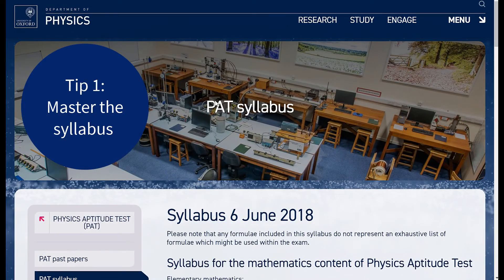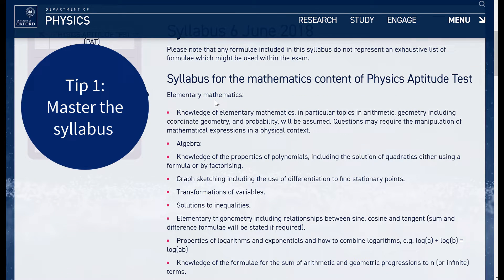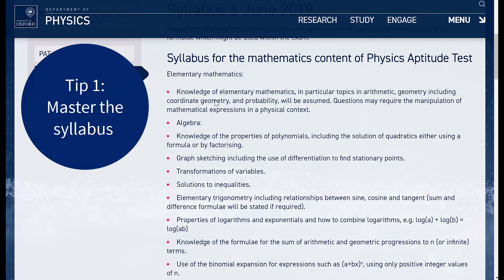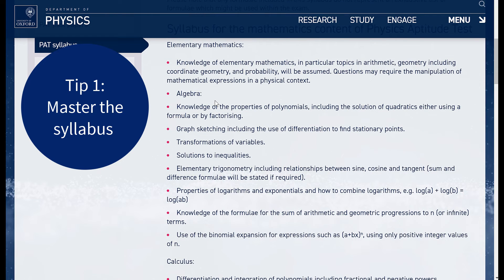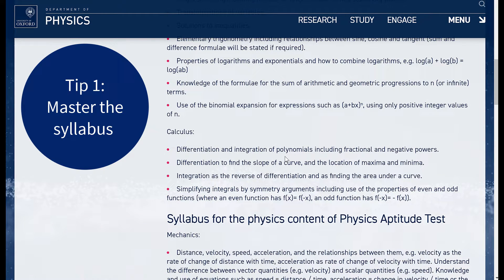My first tip is to ensure that we're really familiar with the syllabus of the exam that we're taking. As an example, I've displayed here the PAT syllabus from the Oxford Admission website. So on this page, you're going to find all the topics that could appear on the physics aptitude test. As an example, over here for instance, in maths, there's going to be some algebra. There may be properties of logarithms. In calculus, you should be familiar with differentiation, integration, integration as reverse of differentiation, etc.